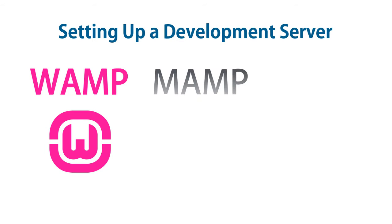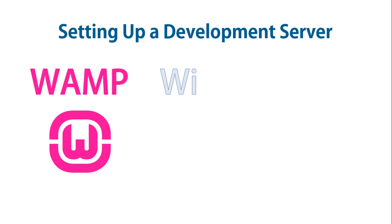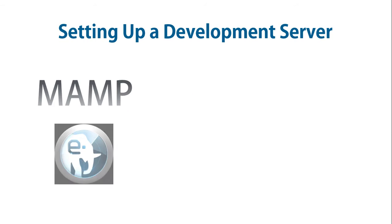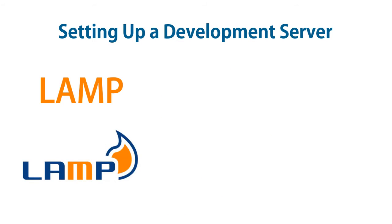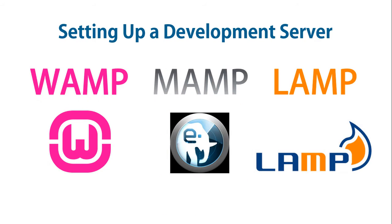What is a WAMP, MAMP, or LAMP? WAMP is an abbreviation for Windows, Apache, MySQL, and PHP. MAMP is an abbreviation for Mac, Apache, MySQL, and PHP. LAMP is an abbreviation for Linux, Apache, MySQL, and PHP. These abbreviations describe a fully functioning setup used for developing dynamic internet web pages.